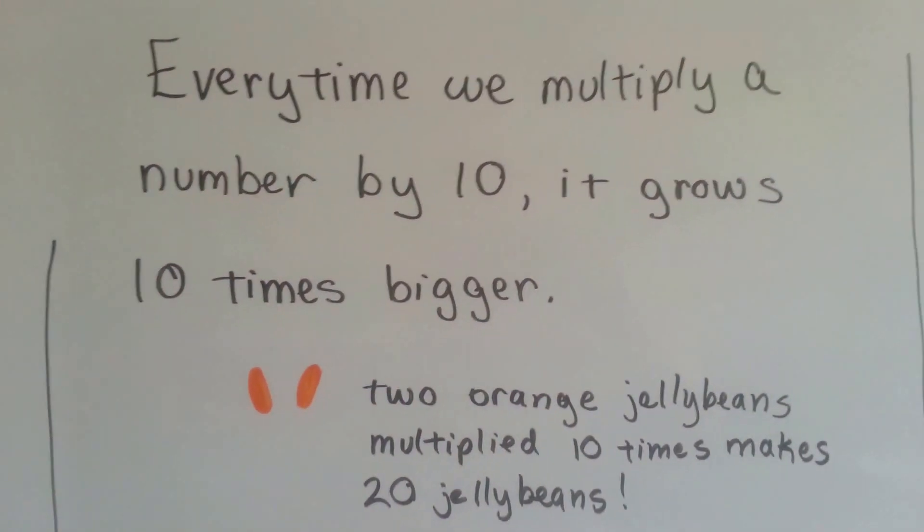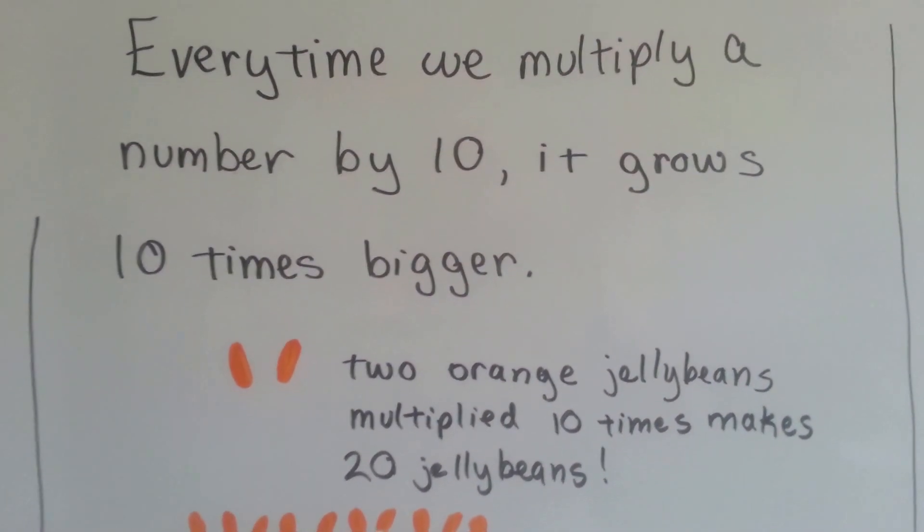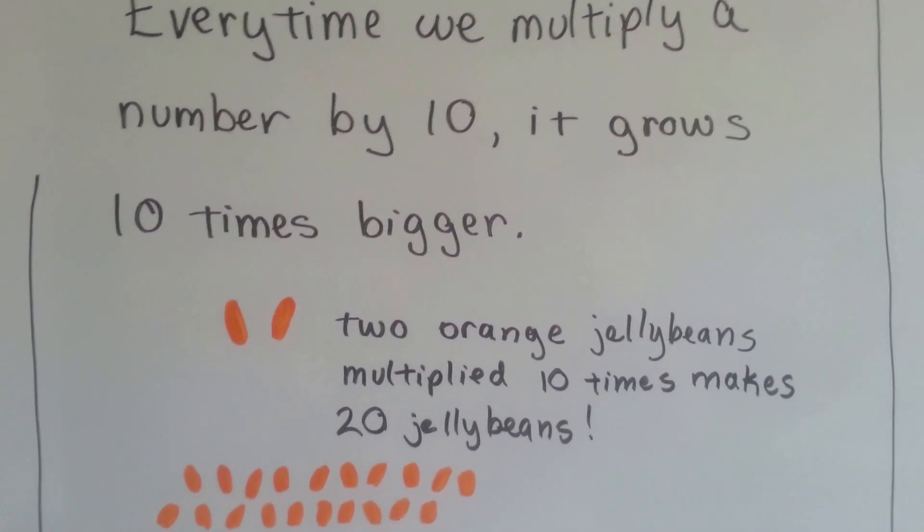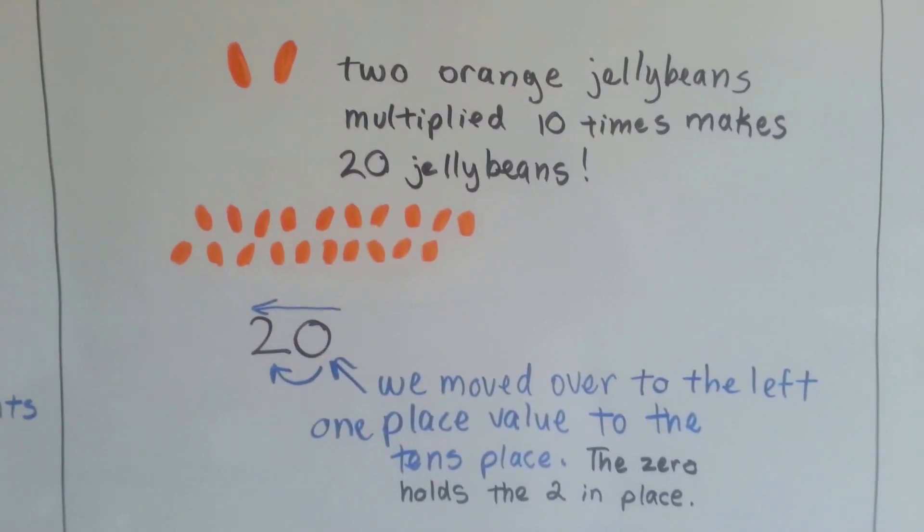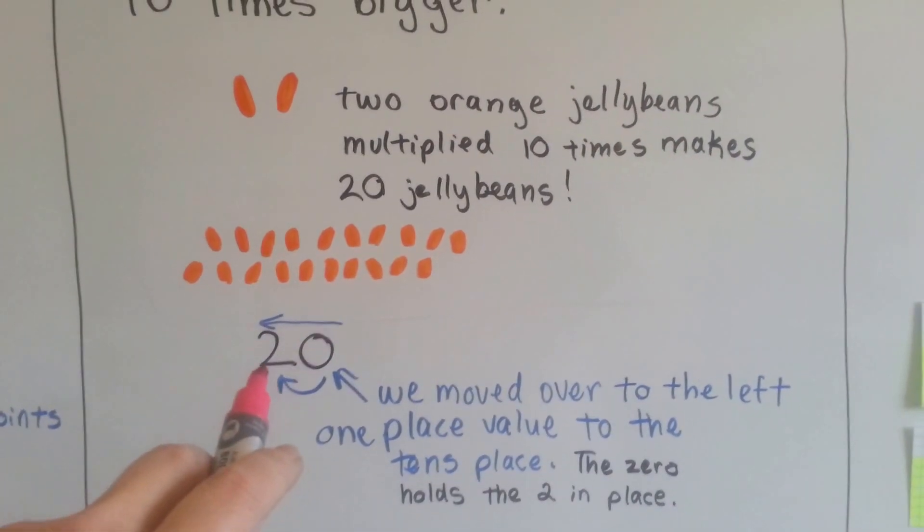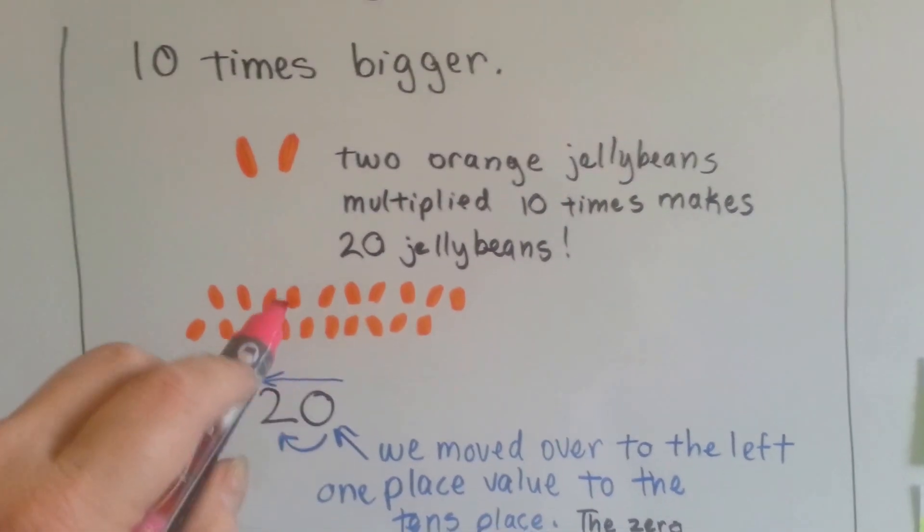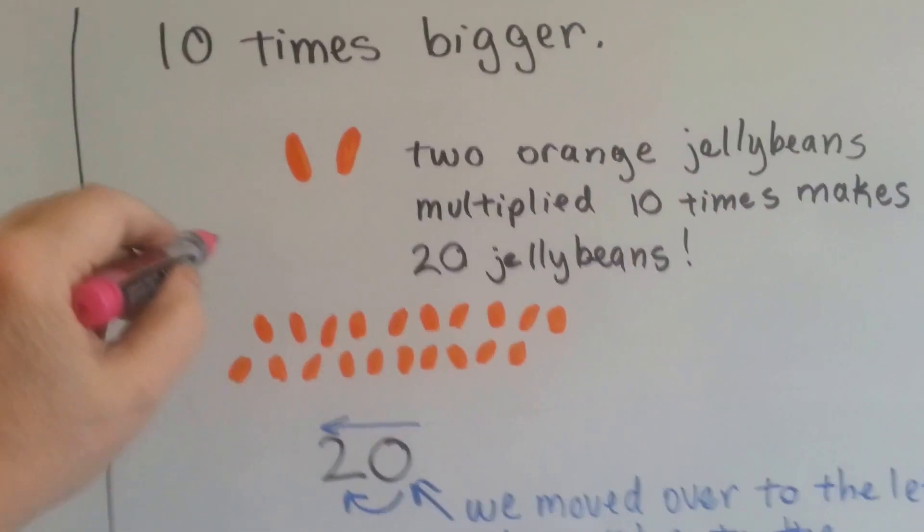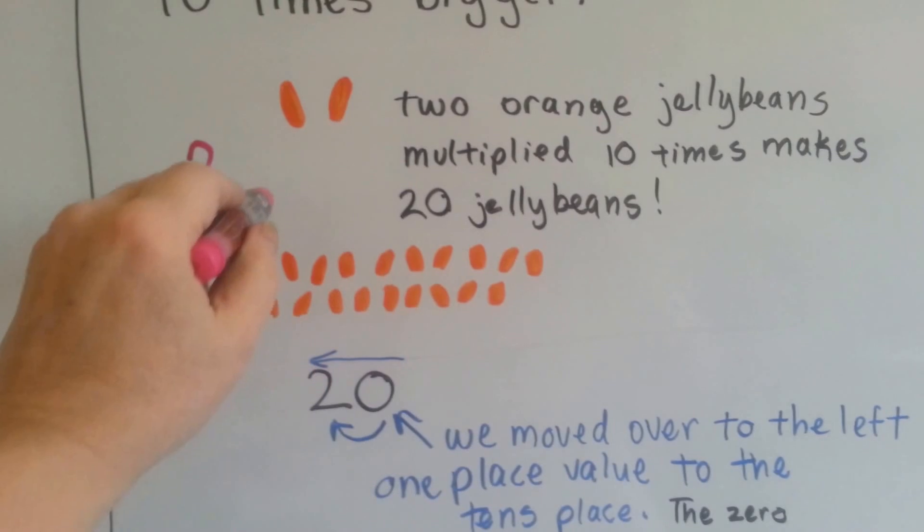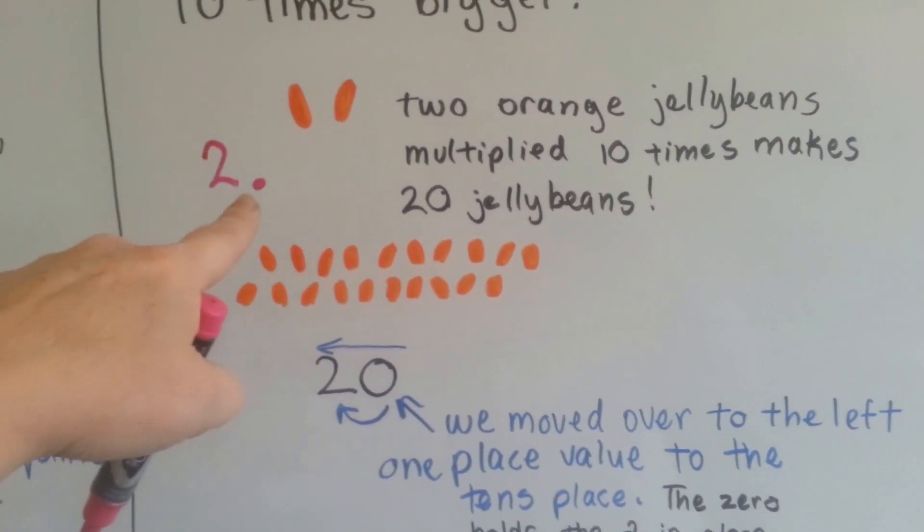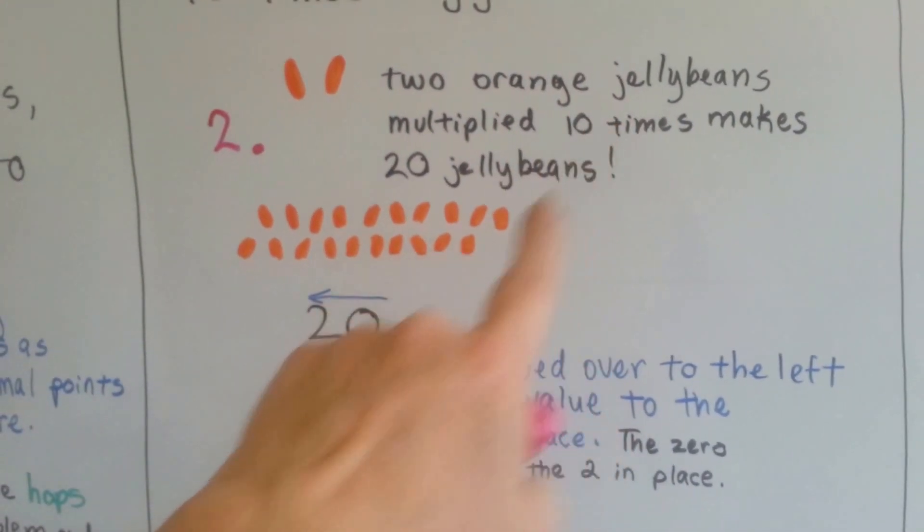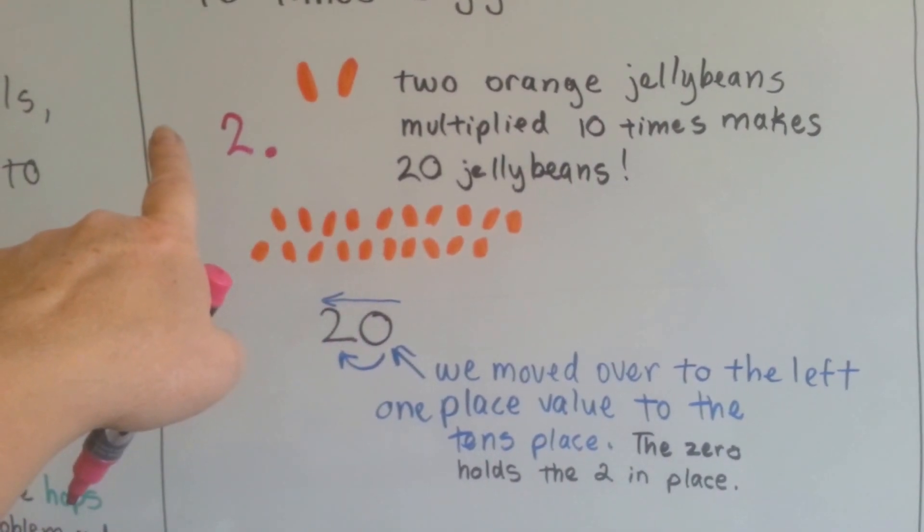Every time we multiply a number by 10, it grows 10 times bigger, right? You have 2 orange jelly beans. We multiply it 10 times, it's going to make 20 jelly beans. We moved to the left one place value to the tens place because we multiplied by 10. So the 2 got shoved from being by itself. It got shoved over, away from the fictitious decimal point. When you write a 2, it looks like this, right? There's actually a decimal point on that side of it. When we multiplied it by 10, we moved the 2 away from the decimal point one space.